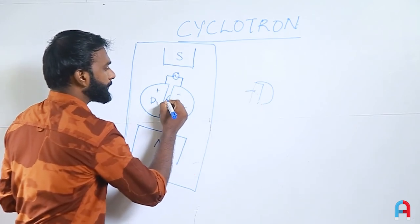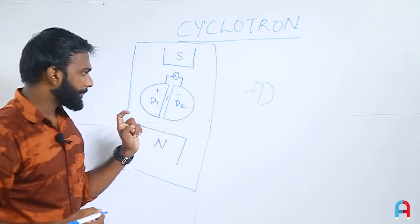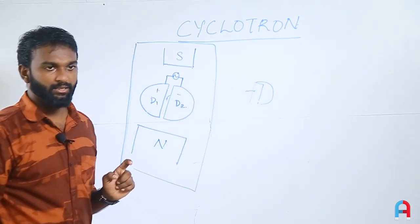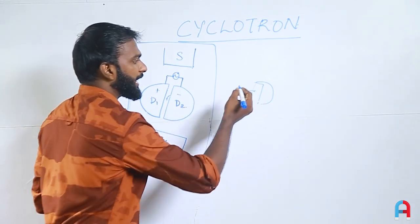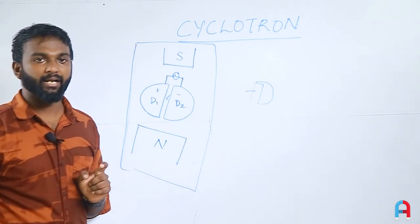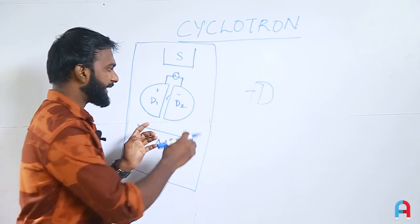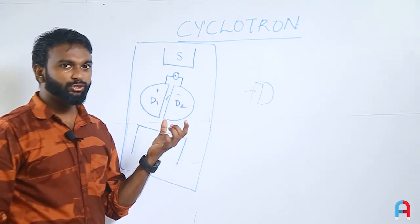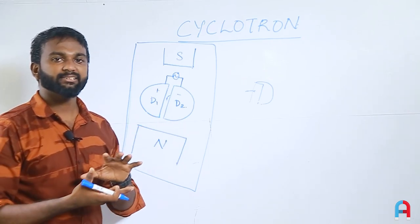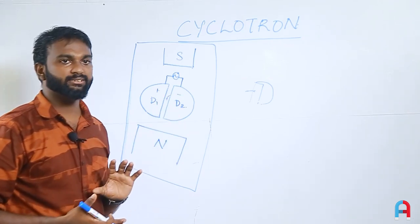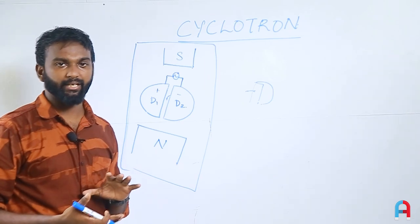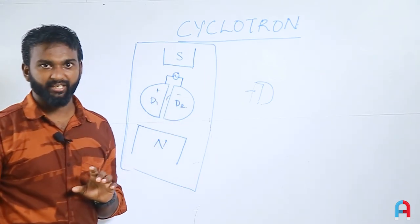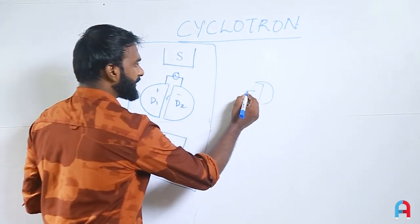The particle accelerates due to the electric field between the Ds. But as soon as it enters D2, there is no further acceleration inside the hollow D, because there is no electric field inside. This is called electrostatic shielding — there is no electric field inside the hollow metallic D.